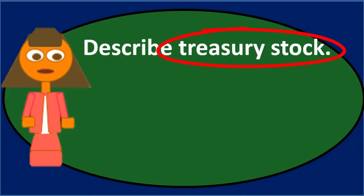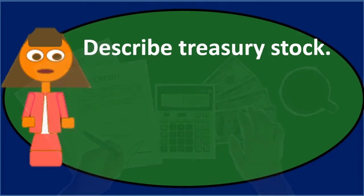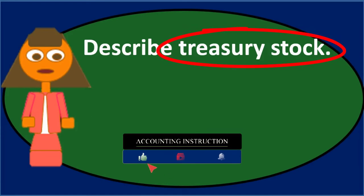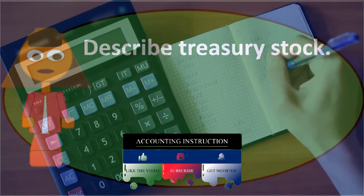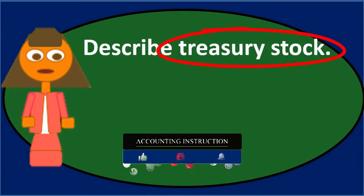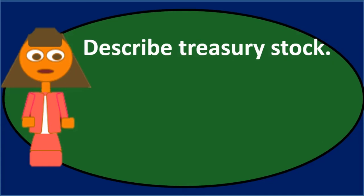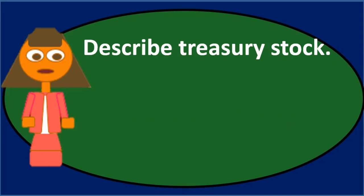Because we are buying our own shares, the debit goes to an equity account rather than an asset account. The equity section normally carries a credit balance, so debiting it decreases equity. This makes sense since we paid out cash. For the accounting equation — assets equal liabilities plus equity — cash goes down and equity goes down, with no effect on net income.